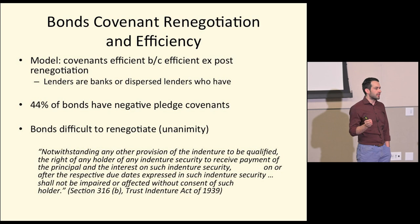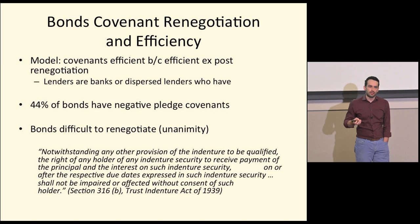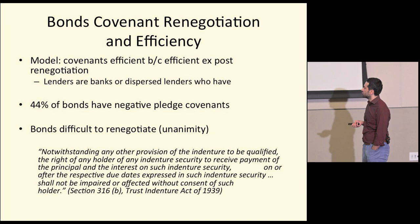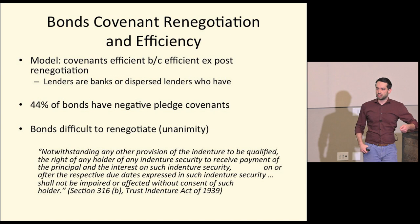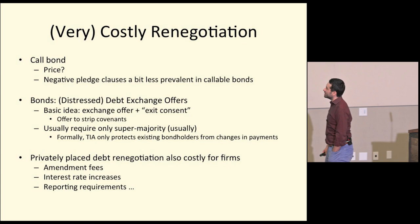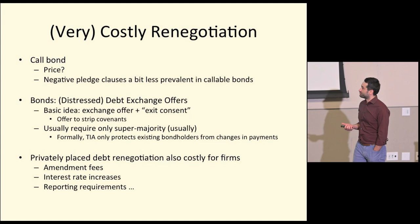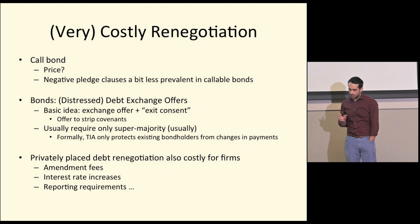Bank debt doesn't really have negative pledge covenants. Bonds, under the Trust Indenture Act of 1939, are quite difficult to renegotiate — you need near unanimity. If one bondholder loses the notice asking them to waive a covenant violation, you get a very inefficient outcome. You could in principle call bonds with a callable provision, but the question is at what price — does that overcome the free rider problem and maintain credibility?